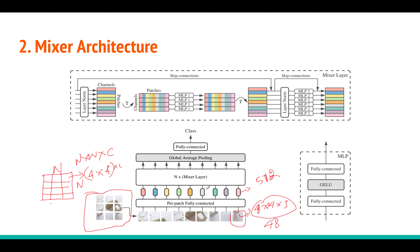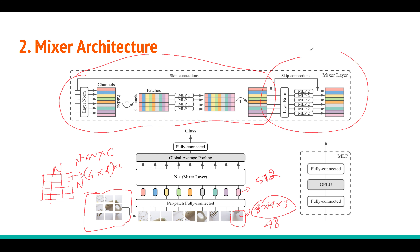Once you get this sequence of vectors, you can apply anything — transformer, bidirectional RNN, whatever you like. But in this case they apply something called Mixer layers, and there will be N of them. One Mixer layer looks like this: it is divided into two parts. One is called the Token Mixer and the other is called the Channel Mixer. In both the token mixer and channel mixer, we only have an MLP — a simple one-layer feed-forward neural network built using nn.Linear from PyTorch. These MLPs are shared across all the inputs in the sequence.